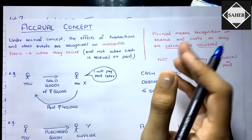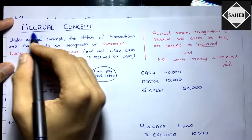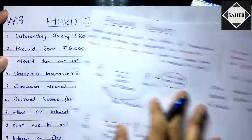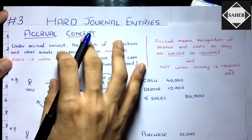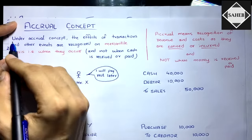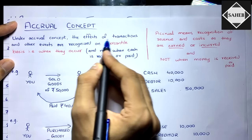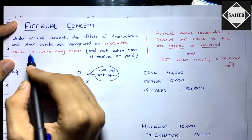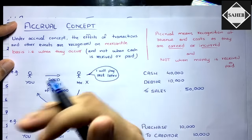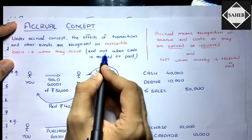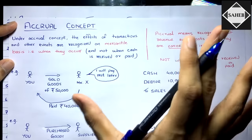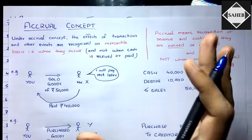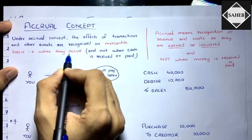Before moving on to the general entries, I want to explain the accrual concept of accounting, because to understand these entries logically you need a proper understanding of the accrual concept. Under accrual concept, the effects of transactions and other events are recognized on a mercantile basis — you have to record transactions as and when they occur, not when cash is received or paid.